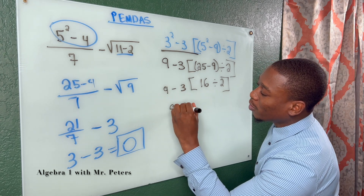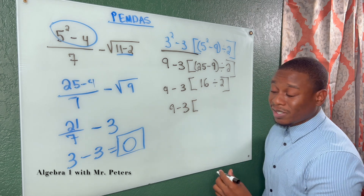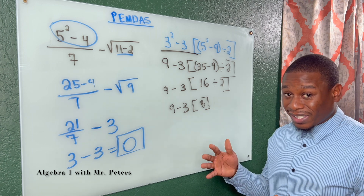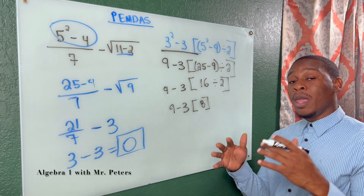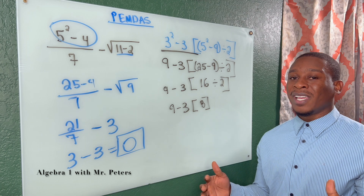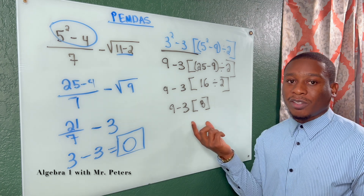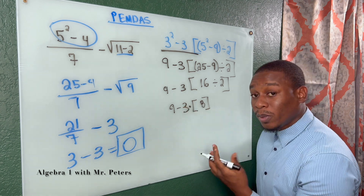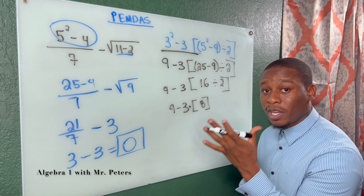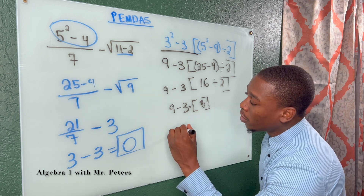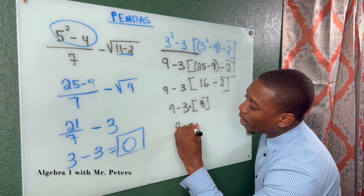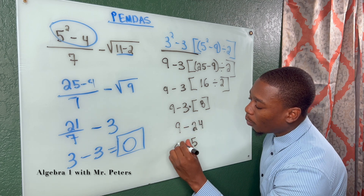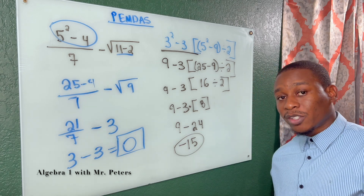This is the biggest error I see students make. What they want to do is 9 minus 3 to get 6 and then multiply that 6 times 8 — that is going to be wrong. Order of operations: we have to do multiplication first. They're not going to put that multiplication symbol. You have to remember that you're distributing, i.e., multiplying. So we're going to have 9 minus 24. When we simplify this order of operations problem, we're going to get negative 15 as an answer.